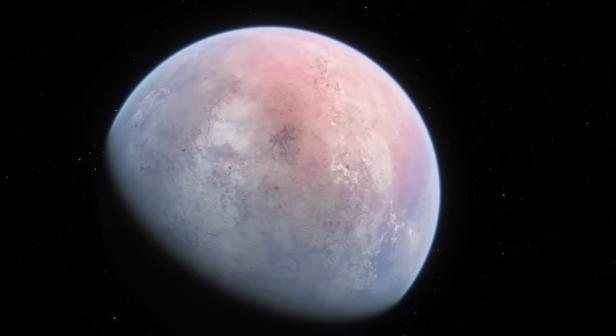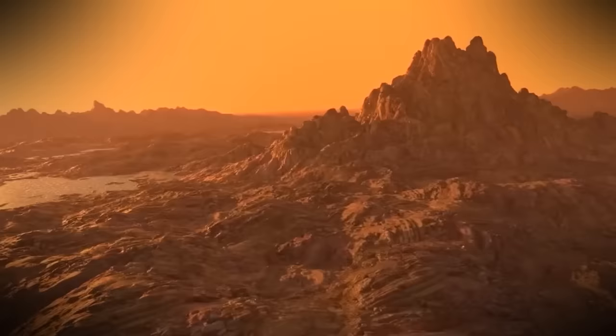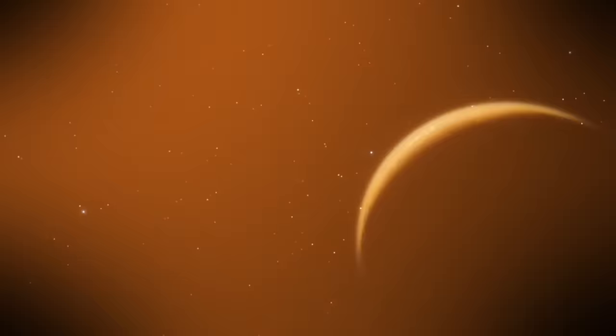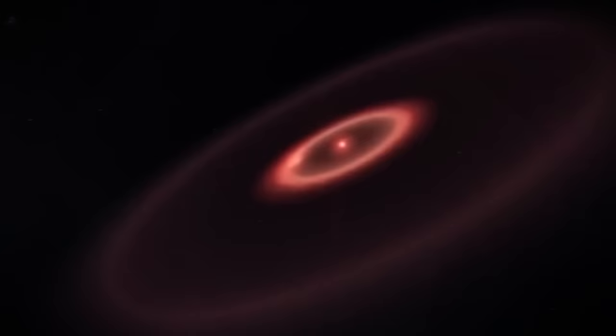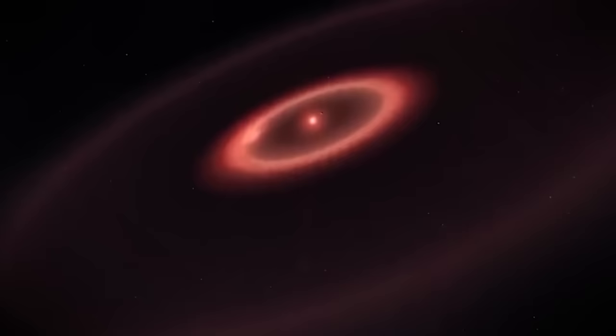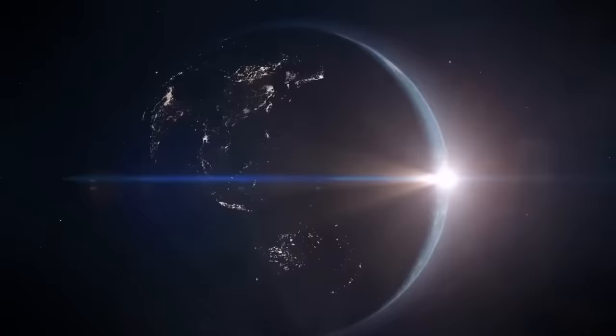One of the most captivating aspects of the unveiled image is the play of light and shadow across Proxima b's surface. These variations provide valuable insights into the planet's rotation, axial tilt, and overall dynamics. The meticulous examination of these features opens avenues for understanding Proxima b's climate patterns and seasons, offering a comparative lens through which we can appreciate the diversity of planetary environments in our cosmic neighborhood.